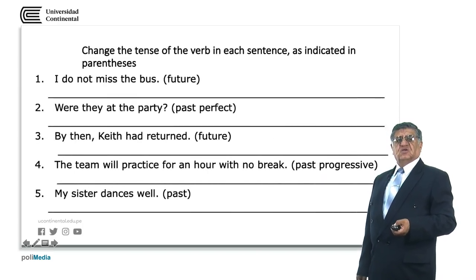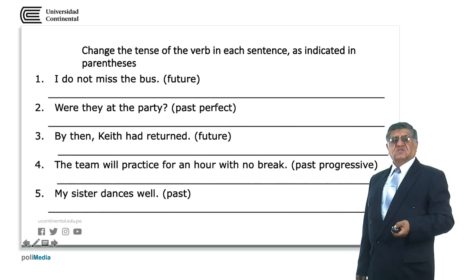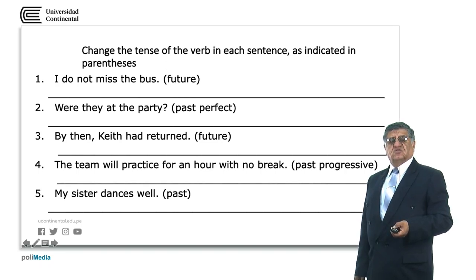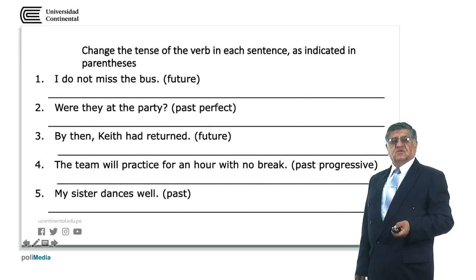Please change the tense of the verb in each sentence as indicated in the parenthesis. Number one: I do not miss the past — change to the future. Number two: to the past perfect. Number three: to the future. Number four: to the past progressive. Number five: to the past.